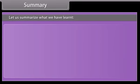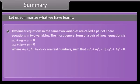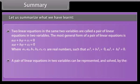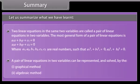Summary: Two linear equations in the same two variables are called a pair of linear equations in two variables. The most general form is a1x + b1y + c1 = 0 and a2x + b2y + c2 = 0, where a1, a2, b1, b2, c1, c2 are real numbers such that a1² + b1² ≠ 0 and a2² + b2² ≠ 0. A pair of linear equations can be represented and solved by: 1. Graphical method and 2. Algebraic method.